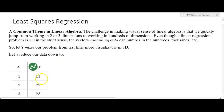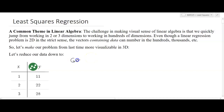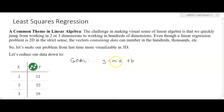We're going to look at just three ordered pairs in two dimensions, and what we want to do is write an equation. Our goal is to get some linear function of the form y equals mx plus b, where m is the slope and b is the vertical intercept. We want to make this more linear algebra based, so we're searching for the best slope and the best y-intercept.